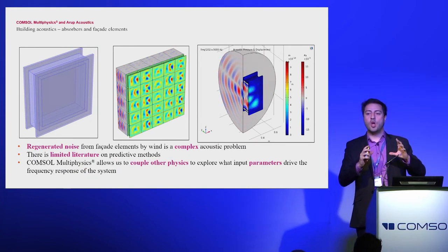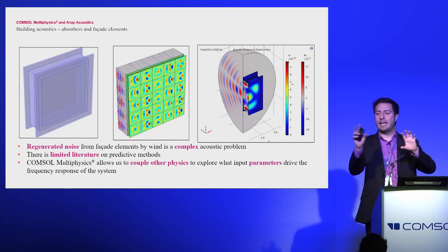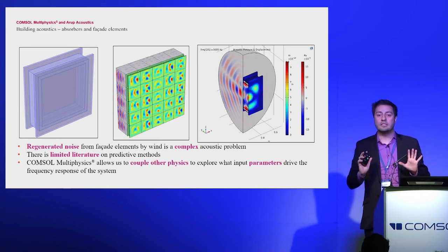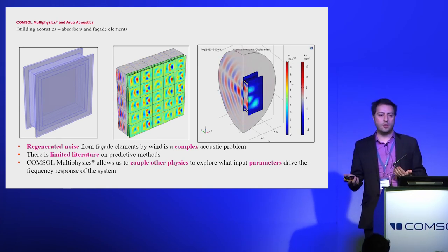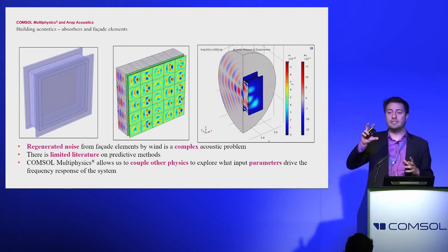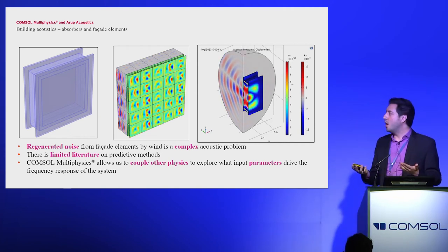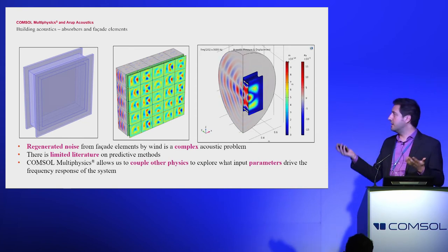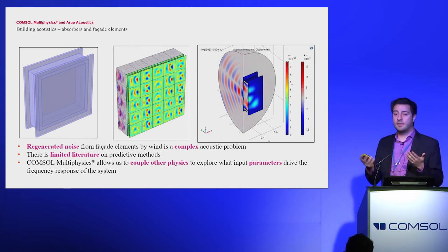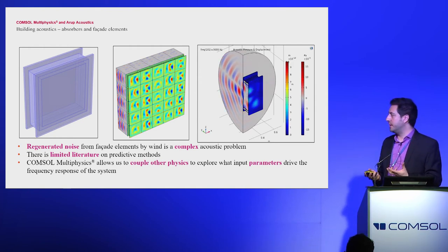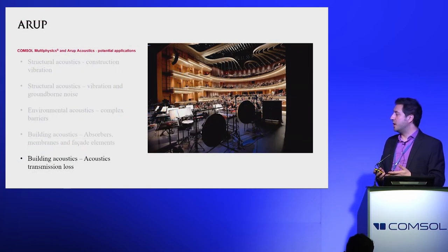We also use COMSOL to assess facade elements in isolation. When a complex facade has many repeated elements, you can get undesired effects from wind or other noise sources exciting the facade. We take one element in isolation, study it, and identify what causes undesirable resonance — whether it's the materials, the air gap, or the connections. Modelling in COMSOL lets you really see what the problems could be.